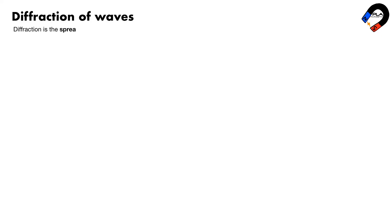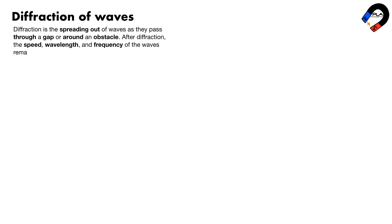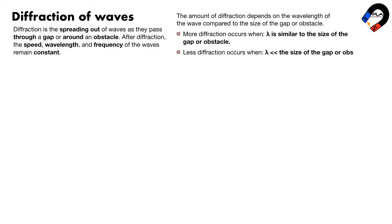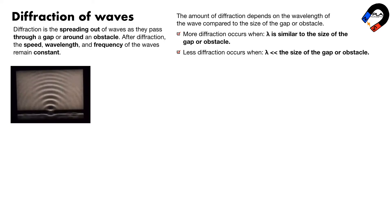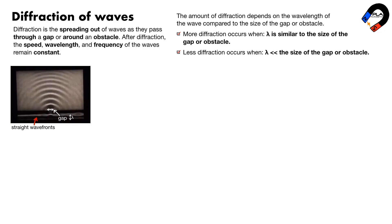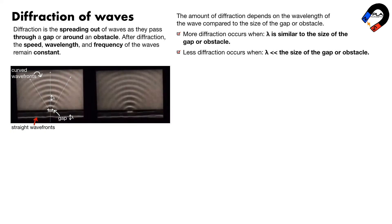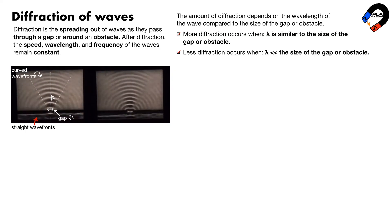Diffraction of waves: diffraction is the spreading out of waves as they pass through a gap or around an obstacle. After diffraction, the speed, wavelength, and frequency of the waves remain constant. The amount of diffraction depends on the wavelength of the wave compared to the size of the gap or obstacle. More diffraction occurs when the wavelength is similar to the size of the gap. Less diffraction occurs when the wavelength is much smaller than the size of the gap. When the gap size is similar to the wavelength, straight wave fronts spread out more and become curved.